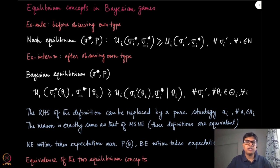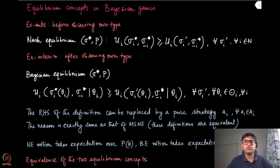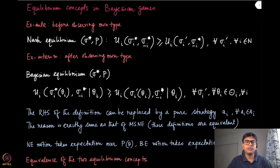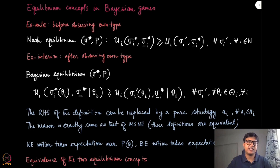There are two stages as we have discussed: there is an ex-ante stage where certain decisions are being taken. We have so far discussed the utilities in the ex-ante and ex-interim stages, and accordingly the strategies taken are called ex-ante strategies and ex-interim strategies.